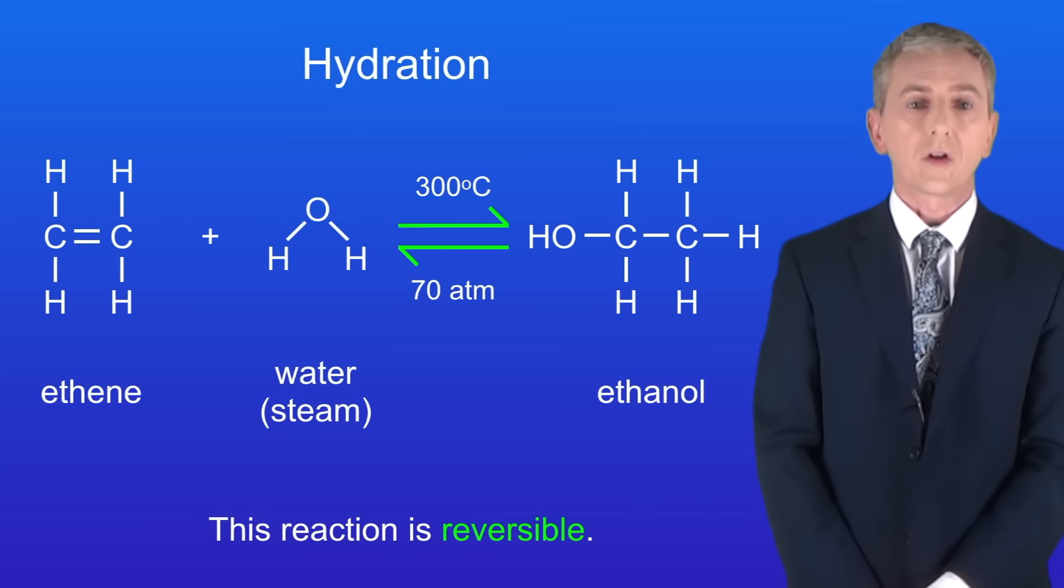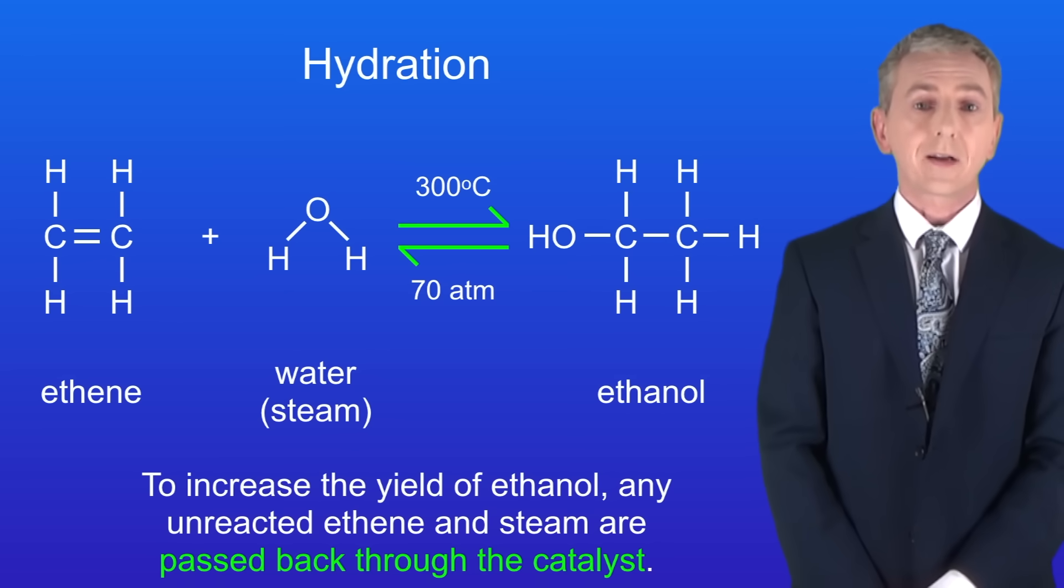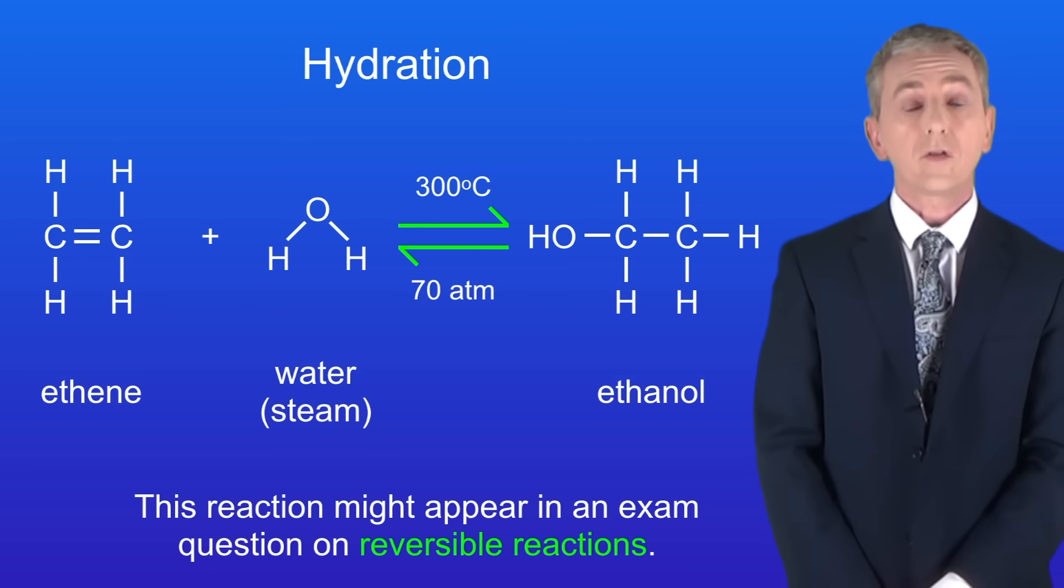Now you'll notice that this reaction is reversible. So to increase the yield of ethanol any unreacted ethene and steam are passed back through the catalyst. I should point out that this reaction might appear in an exam question on reversible reactions.